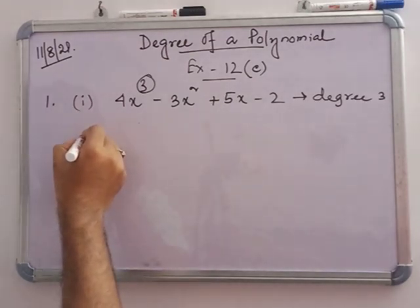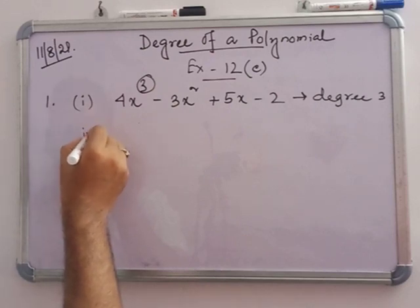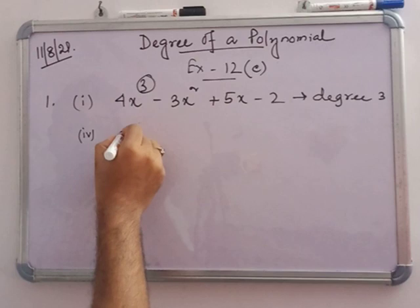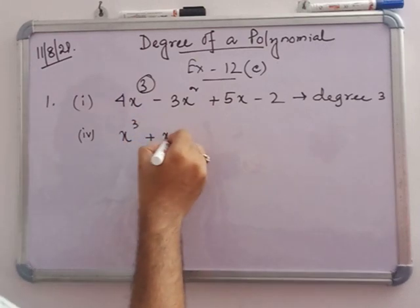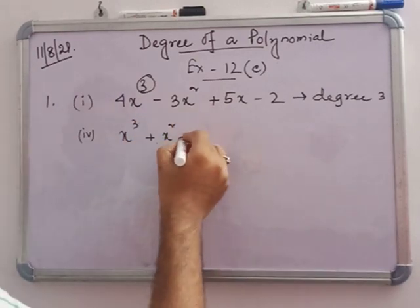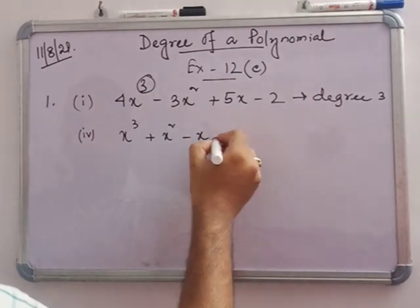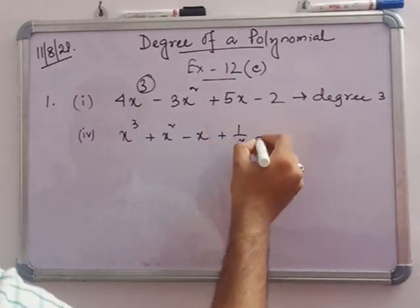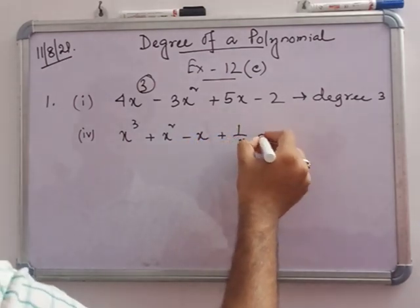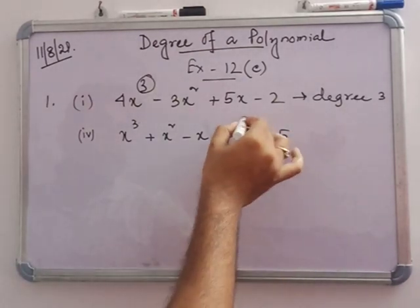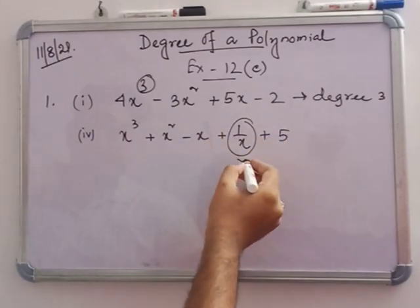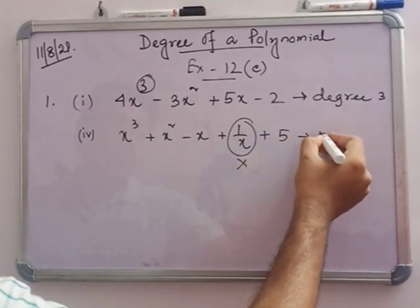Number 4: x cubed plus x squared minus x plus 1/x plus 5. This is not a polynomial because the term 1/x is present.